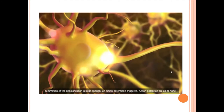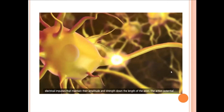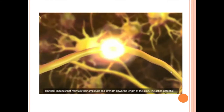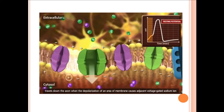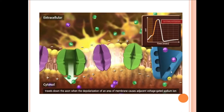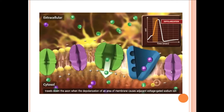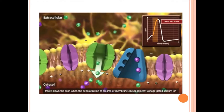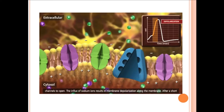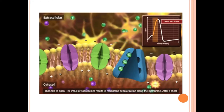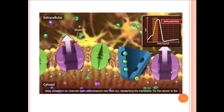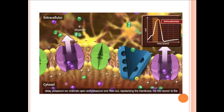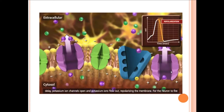Action potentials are all-or-none electrical impulses that maintain their amplitude and strength down the length of the axon. The action potential travels down the axon when depolarization of an area of membrane causes adjacent voltage-gated sodium ion channels to open. The influx of sodium ions results in membrane depolarization along the membrane. After a short delay, potassium ion channels open and potassium ions flow out, repolarizing the membrane.